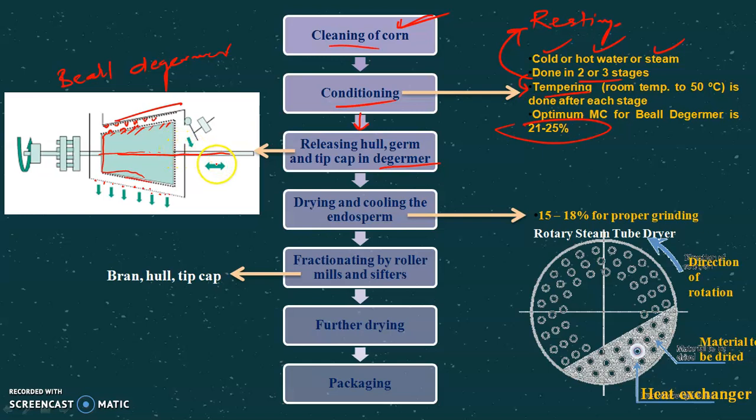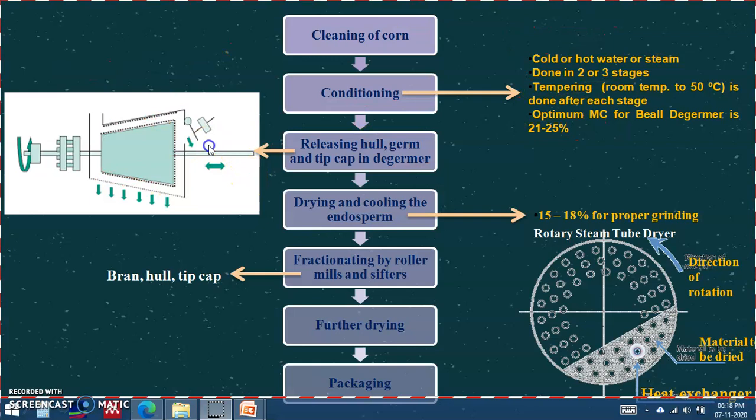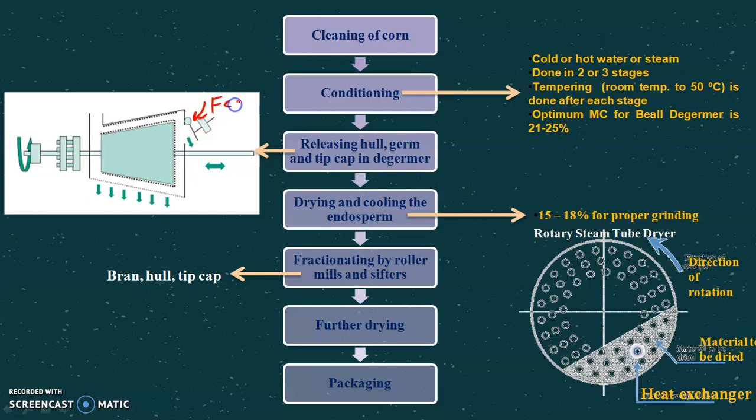The rotating cone has similar projections over most of its surface. This is the feed end. Once the grains come inside this chamber, they get cut into pieces, the germ gets released, the size gets reduced, and the product comes out through the perforated screen.